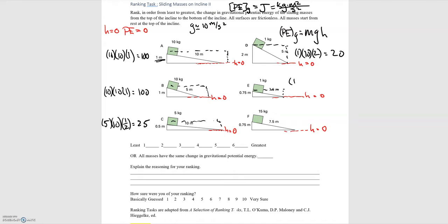Then for this one we have 1 kilogram times 10 meters per second squared times 0.75 meters for the height, which is just 3 quarters, and that's equal to 7.5.